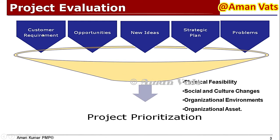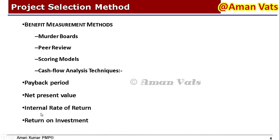When we put customer requirements, opportunities, new ideas, strategic plans, and problems together — like a funnel — we are able to prioritize our projects and define project selection methods. Benefit measurement methods include murder board, peer review, scoring model, and cash flow analysis techniques.